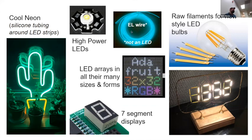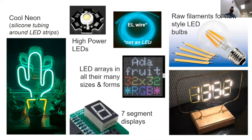EL wire is another one that's super fun. It's not technically an LED — it's really a capacitor that glows, which is kind of bizarre — but it's another thing that lights up. It's a lot dimmer but also super efficient. I have a jacket that lights up with the school mascot on the back and it glows. This is super great for Halloween costumes, decorations, or things used while you're out in the dark. I put it on my backpack with the idea of turning it on while biking at night to be much more visible.